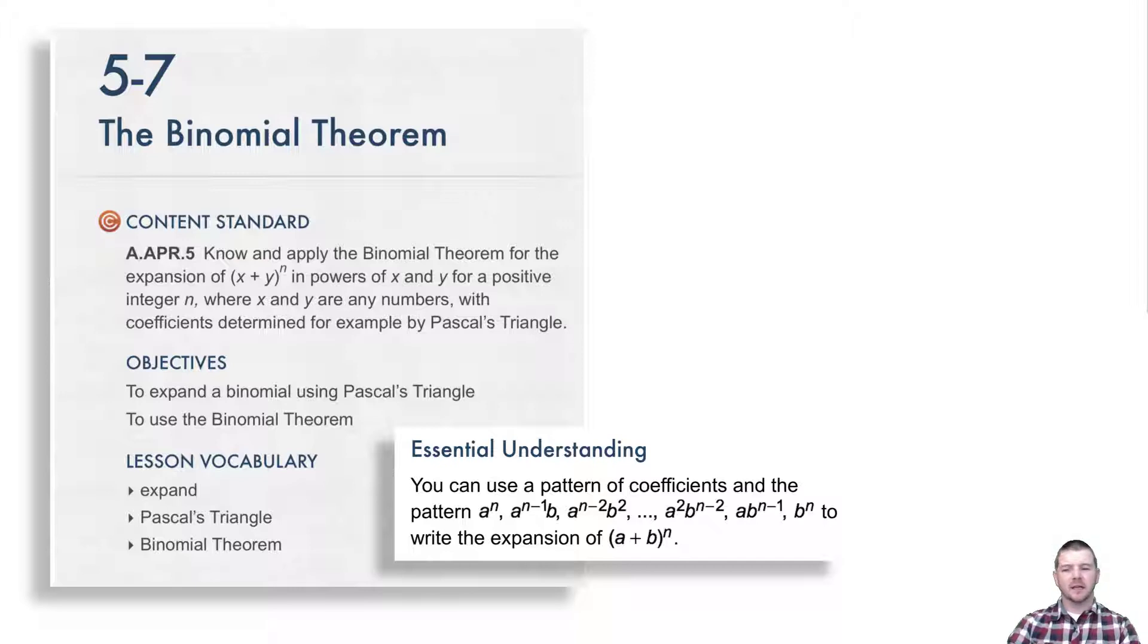The Essential Understanding: You can use a pattern of coefficients and the pattern a^n, a^(n-1)b, a^(n-2)b^2... The pattern continues: a^2b^(n-2), ab^(n-1), b^n, to write the expansion of the binomial (a+b)^n.